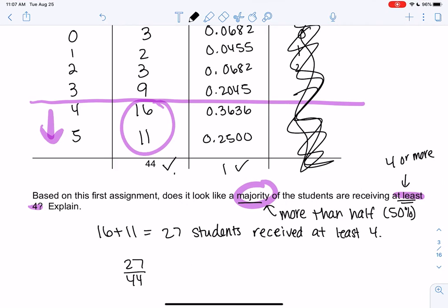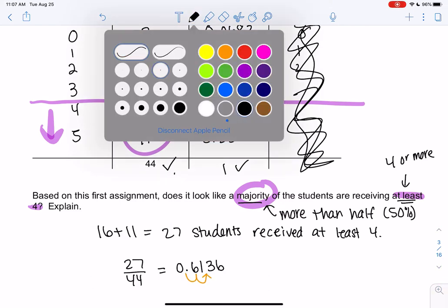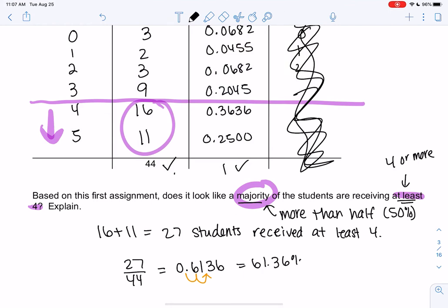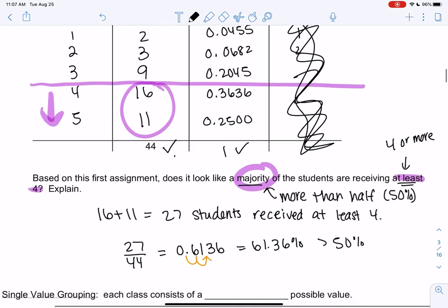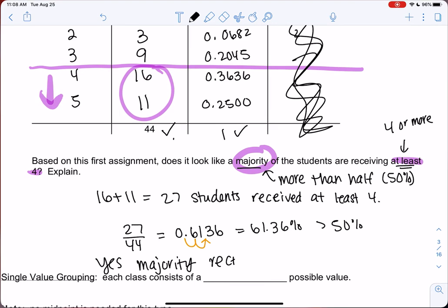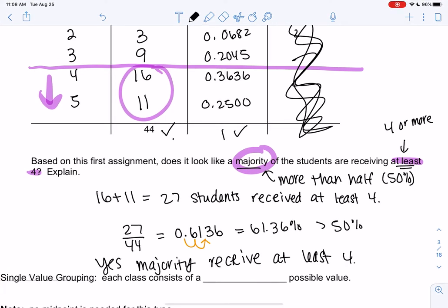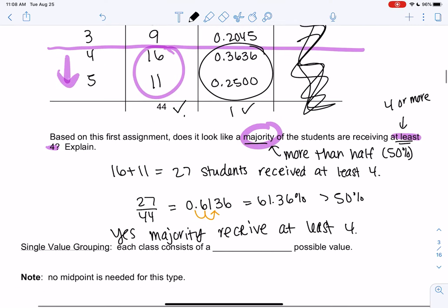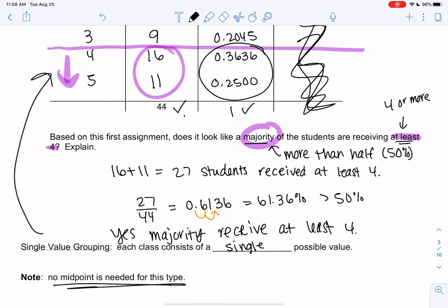27 out of 44 is 0.6136, which we round to 61.36%, which is more than 50%. So yes, majority receive at least 4. Some of you may have noticed you could have added the relative frequencies. You'll get the same number. Just whatever kind of makes sense to you. We called this a single value grouping, and that's because each class only has a single value. Those were all single values, and so midpoints are not needed.